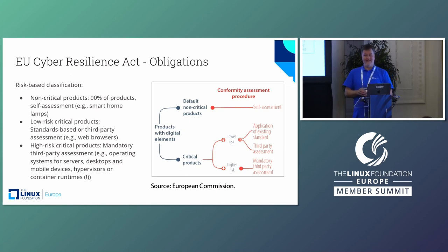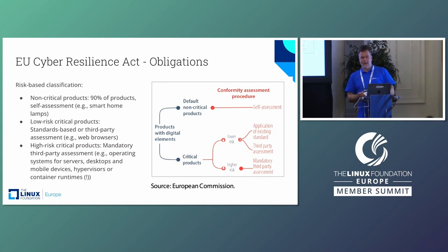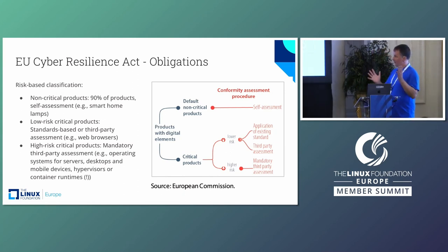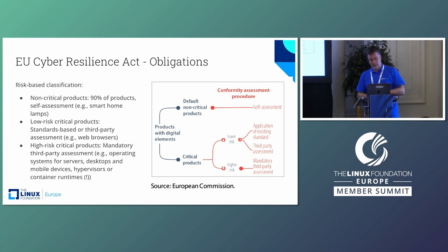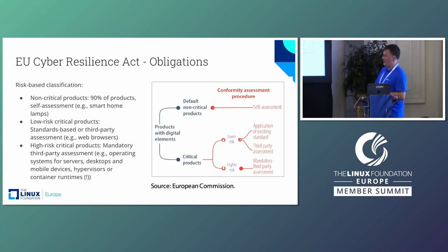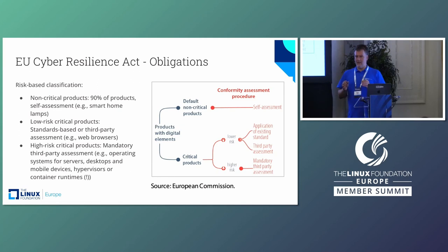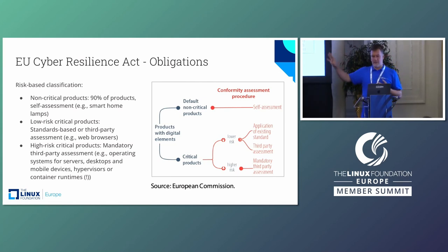The problem with the existing standards is that they don't exist. Usually legislation like this comes with a standardization request to European standards organizations, but these standards don't exist yet, so you probably have to go for a third-party assessment. For high-risk critical products there is mandatory third-party assessment. Currently the list of high-risk critical products includes operating systems for servers, desktops, and mobile devices, hypervisors, and container runtimes. This is clearly open-source critical software infrastructure — not something primarily released by industry. So very clearly, the obligations under the CRA target large-scale open-source projects.